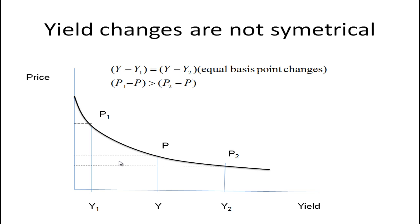If you look at this, you can see that the difference between P1 and P, so the price change when the interest rate drops from Y to Y1 is this size, this vertical distance here. And the amount that the price changes, P2 minus P, when the interest rate goes up from Y to Y2 is this distance here. And we notice that this distance is bigger than this distance.